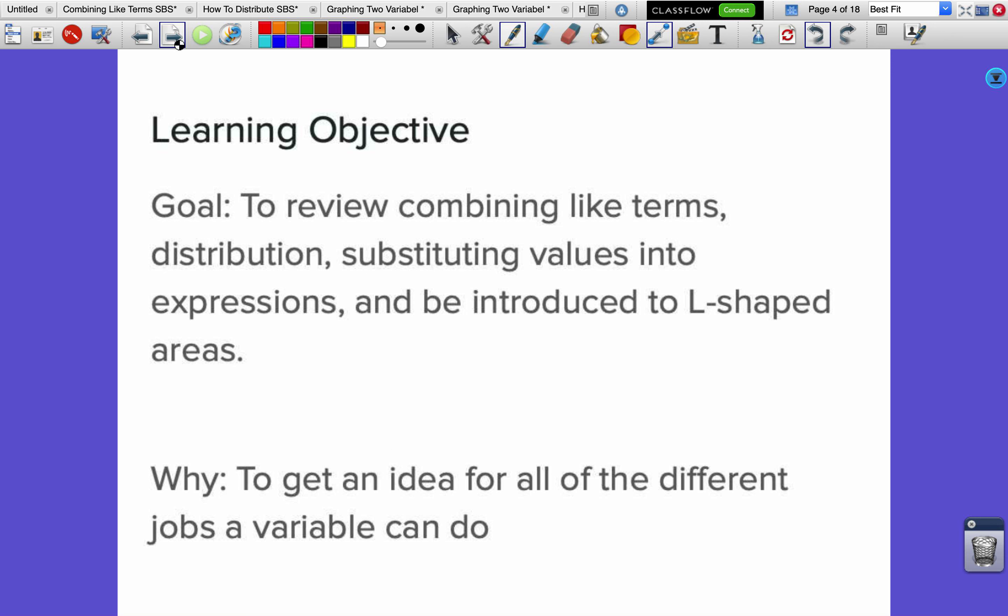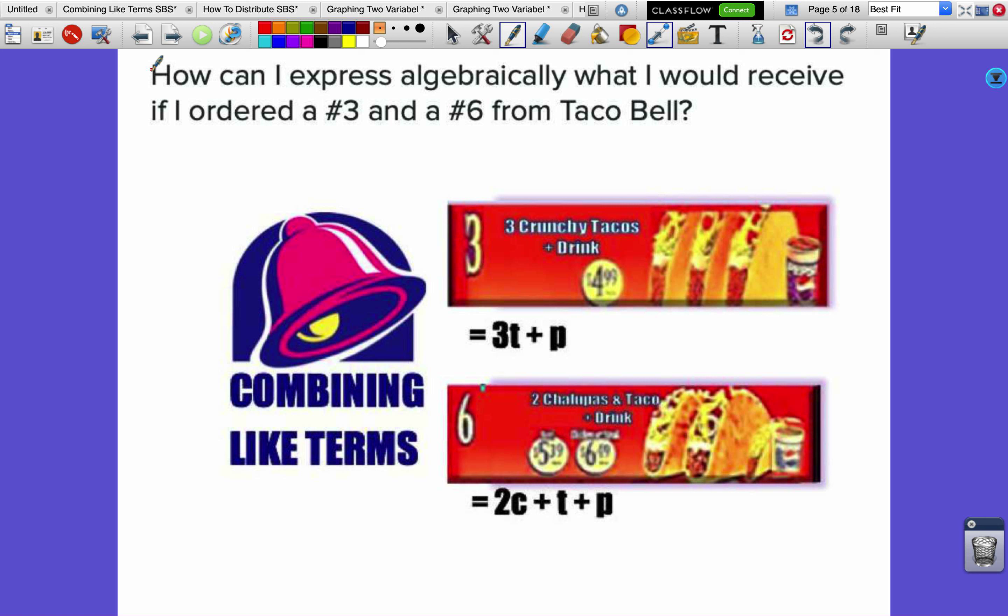Let's imagine we are heading out to Taco Bell after class and I'm feeling extra hungry, so I order a number 3 and a number 6 from Taco Bell. Number 3 is three crunchy tacos and a drink, and a number 6 is two chalupas, a taco, and a drink.